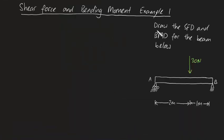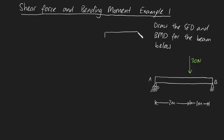G'day guys, in this video I'm going to be showing you how to solve a fairly simple shear force and bending moment problem. We're asked to draw the shear force diagram and bending moment diagram for the beam below. It's a pretty simple setup — simply supported at A and B with a 30 Newton force acting 2 meters along the bar. The first thing you want to do with any problem like this is to always begin with the free body diagram of the entire bar.